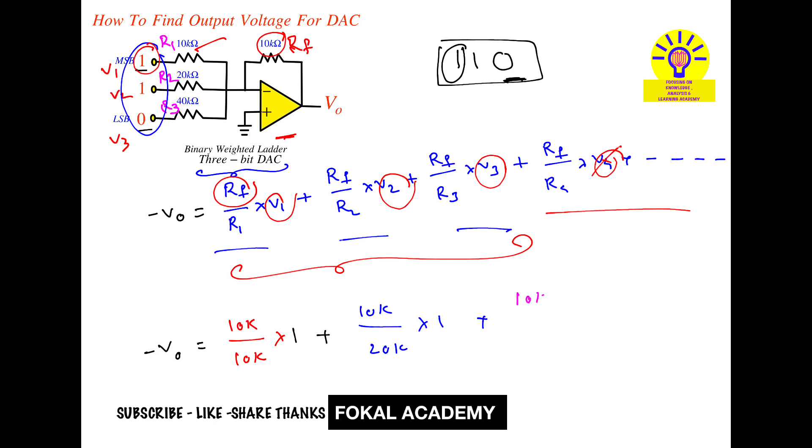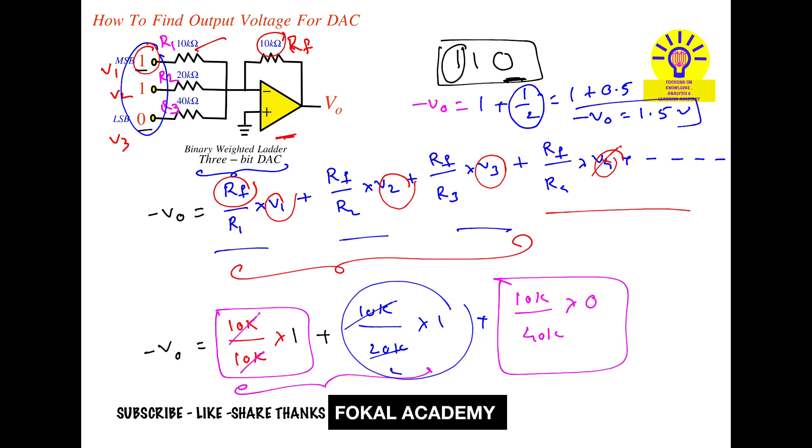Now simplify this equation. Here 10K and 10K cancel and becomes overall it is equal to one. So minus V naught equal to one. And here also you will get, so once R2 is, one by two is 0.5. So minus V naught equal to 1.5 volts.